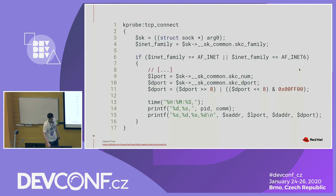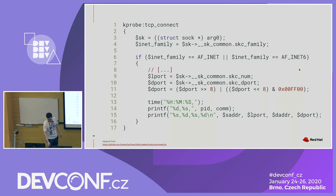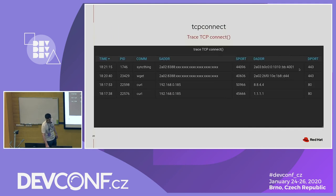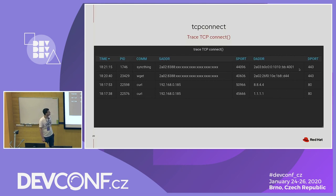This is the rest of the BPFtrace script — I redacted a lot just so you can see the CSV output. In Grafana it becomes a table. You can customize everything: sort by time, remove columns. And it gets refreshed automatically — you'll see it in the demo in a few minutes.